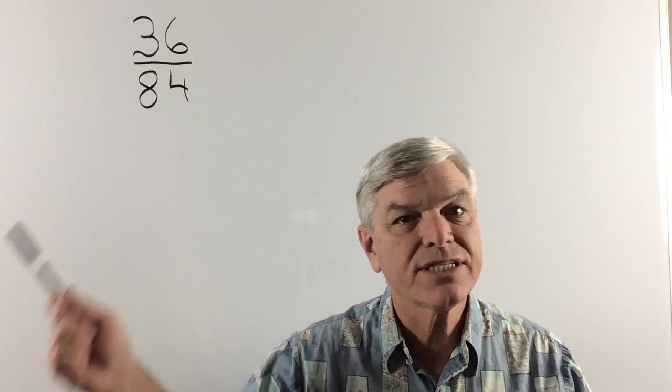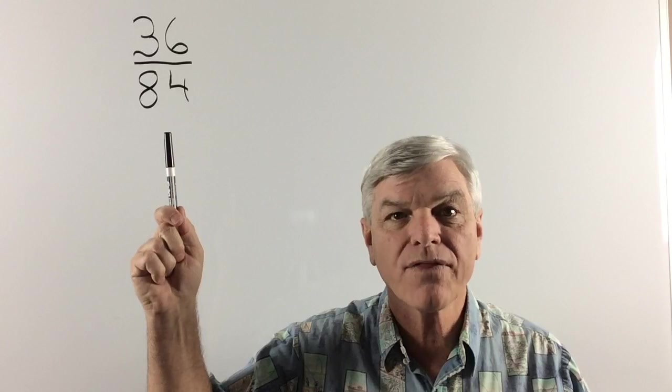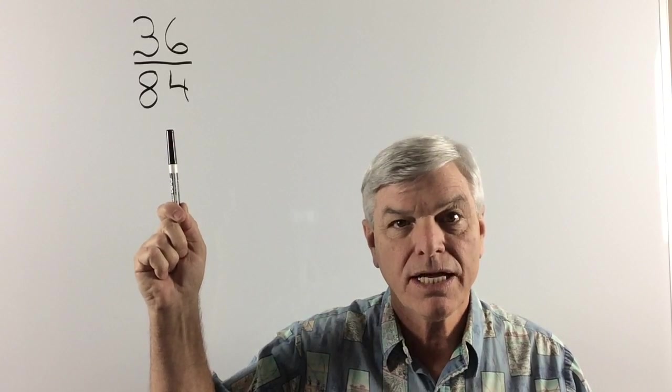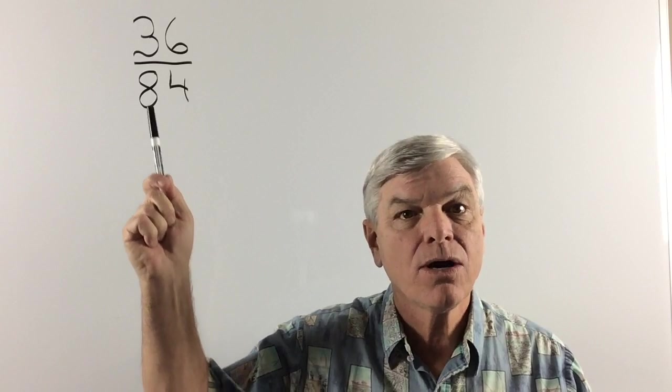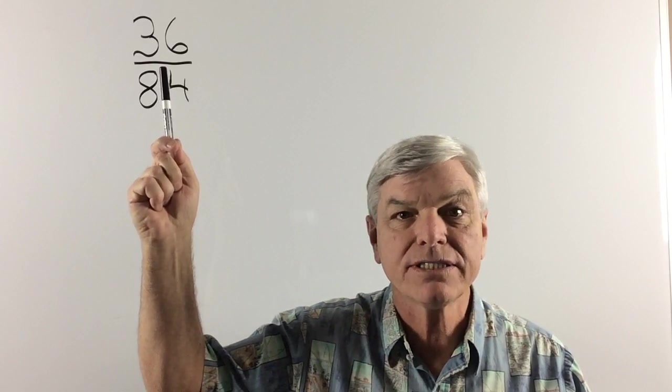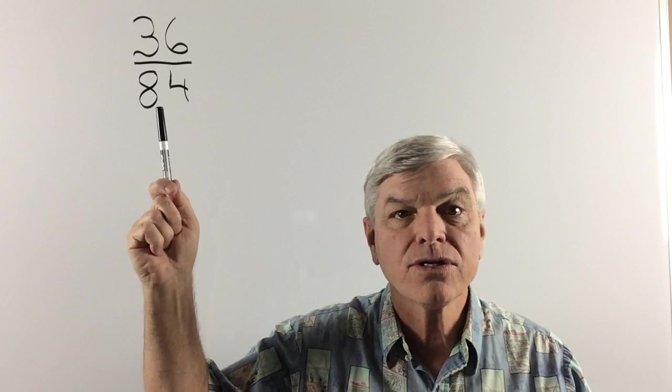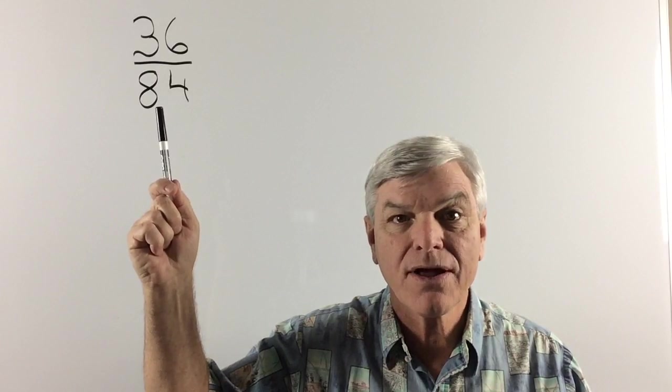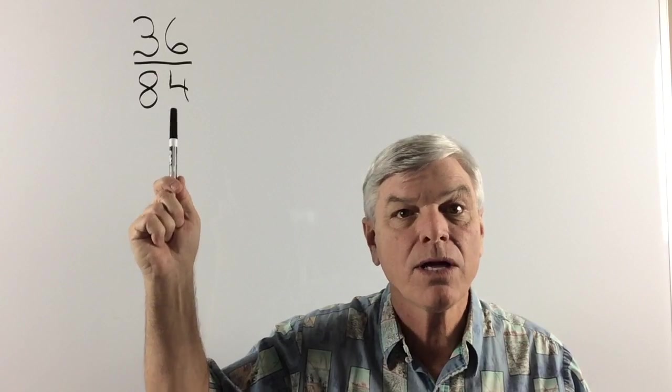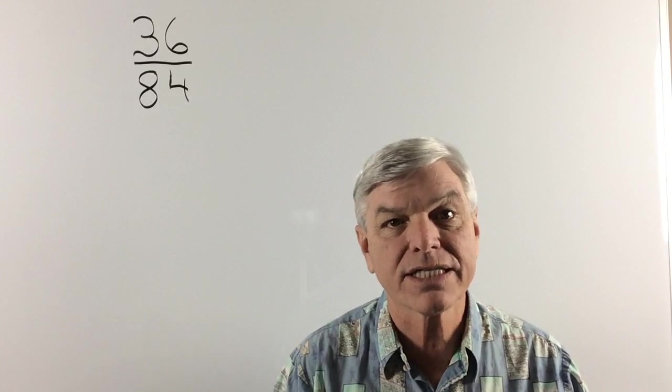Now the fraction that we have here is 36 over 84. That represents 36 parts over 84 parts. With fractions, when the top number is bigger, that represents a bigger fraction. When the bottom number is bigger, that represents a smaller fraction. So this number here is less than 1.